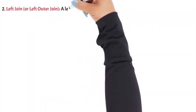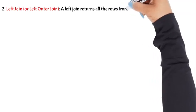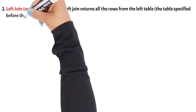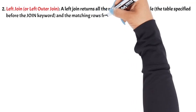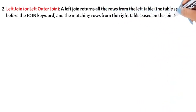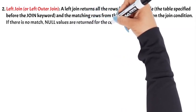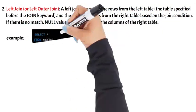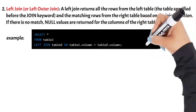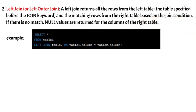2. LEFT JOIN (or Left Outer Join): A left join returns all the rows from the left table (the table specified before the JOIN keyword) and the matching rows from the right table based on the join condition. If there is no match, null values are returned for the columns of the right table. In this example, the left join retrieves all rows from Table1 and the matching rows from Table2. If there are no matches, null values are returned for the columns of Table2.